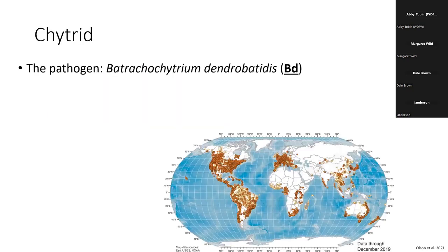The pathogen and disease I was asked to talk about today is the amphibian chytrid fungus. The pathogen is called Batrachochytrium dendrobatidis, or BD for short. There's a new species in this genus called Batrachochytrium salamandrivorans — the salamander-eating fungus. Both of these pathogens can infect both salamanders, which include newts, and frogs and toads.